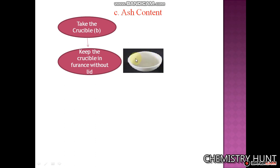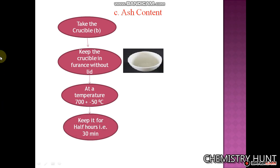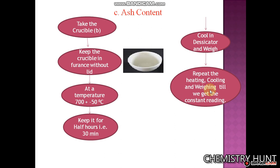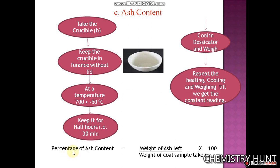Heat at a temperature of about 700 plus or minus 50 degrees Celsius and keep it for 30 minutes. After that, cool it in a desiccator and take its weight. This procedure of heating, cooling, and weighing is repeated until a constant weight is obtained. The percentage of ash content is calculated as: weight of ash left divided by weight of the coal sample taken, multiplied by 100.